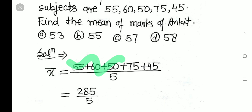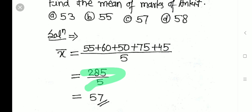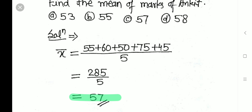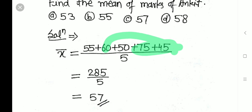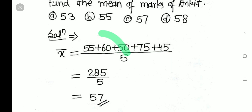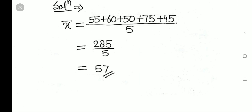So x̄ = (55 + 60 + 50 + 75 + 45) / 5. Adding: 45 + 75 = 120, 120 + 60 = 180, 180 + 50 = 230, 230 + 55 = 285. So x̄ = 285 / 5 = 57. The mean marks of Ankit is 57.